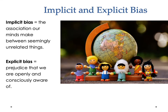This distinction between implicit and explicit bias can be applied to race and ethnicity, but also to many other categories — native-born versus immigrants, or distinctions between men and women. Implicit bias is the association our minds make between seemingly unrelated things, and explicit bias is prejudice that we are openly and consciously aware of. Implicit bias arises primarily through socialization within families, neighborhoods, and schools, and through media exposure, where we are continually exposed to stereotype scripts about different groups.